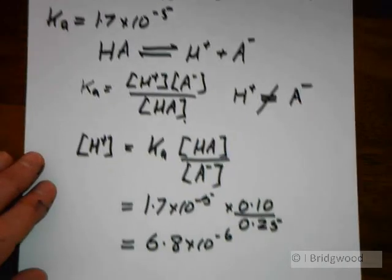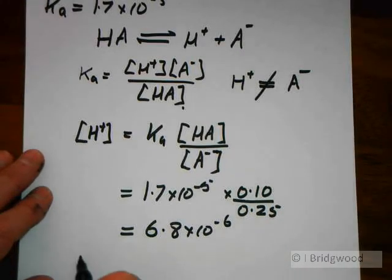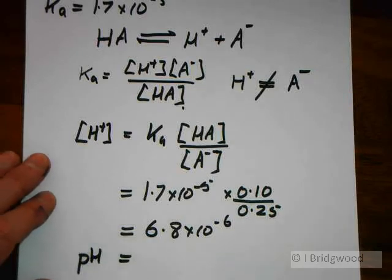Therefore pH equals negative log of 6.8 times 10 to the minus 6, which equals 5.17. We'll show you the next question.